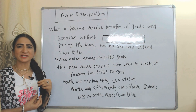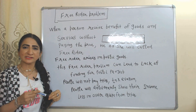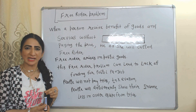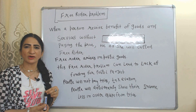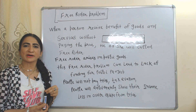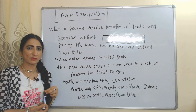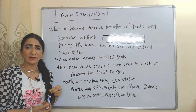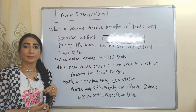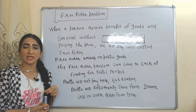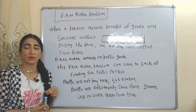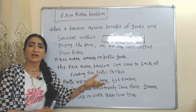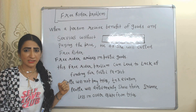Now we will see the free rider problem. When a person receives benefits of goods and services without paying a price, he or she is called a free rider. The free rider problem mainly arises in the case of public goods because we can't exclude people from using public goods whether they are paying taxes or not.